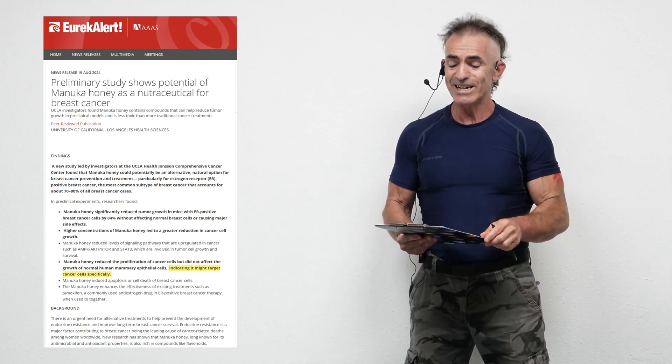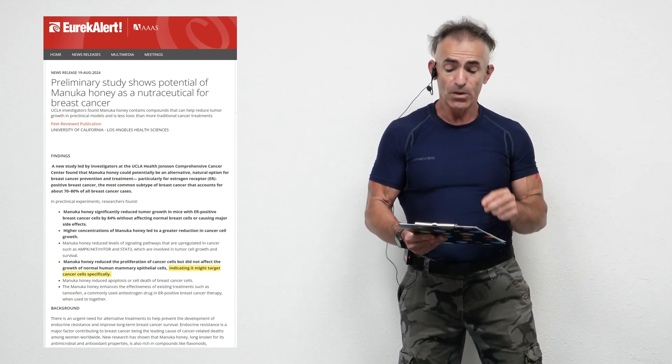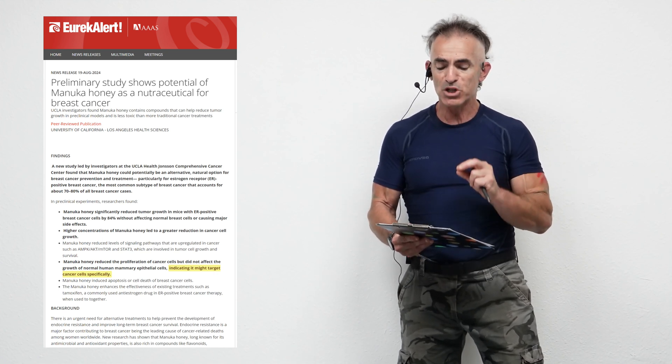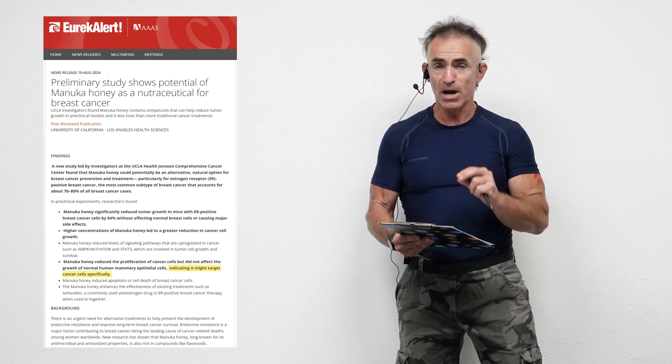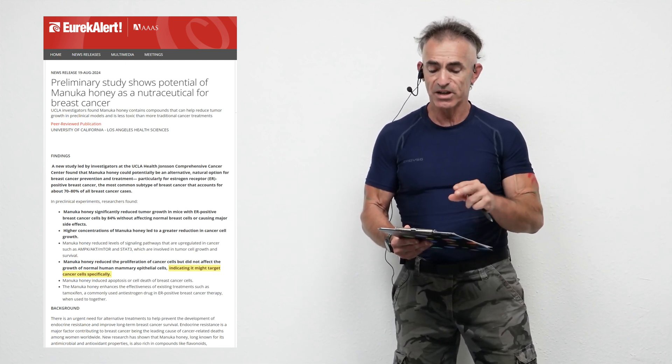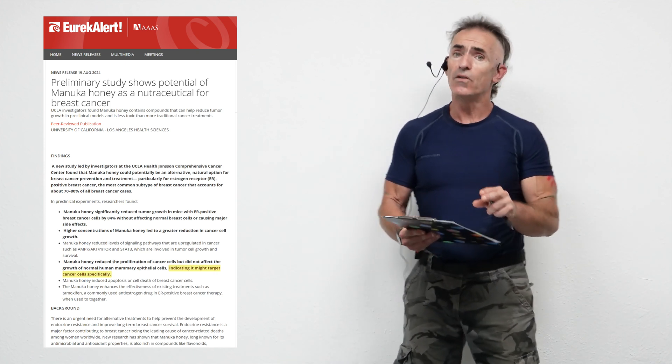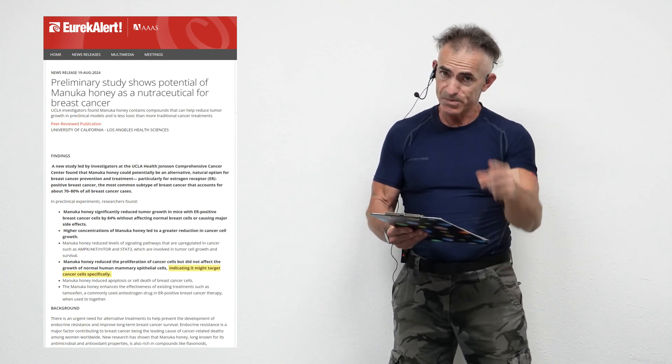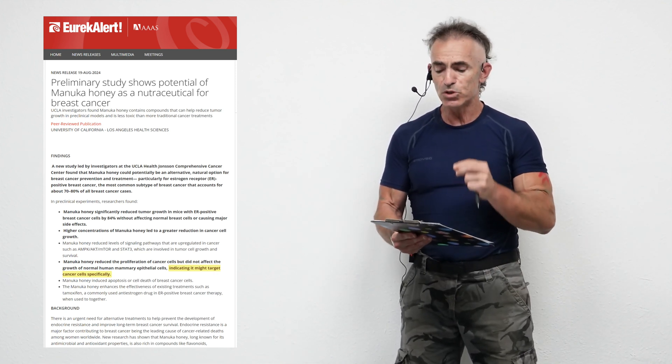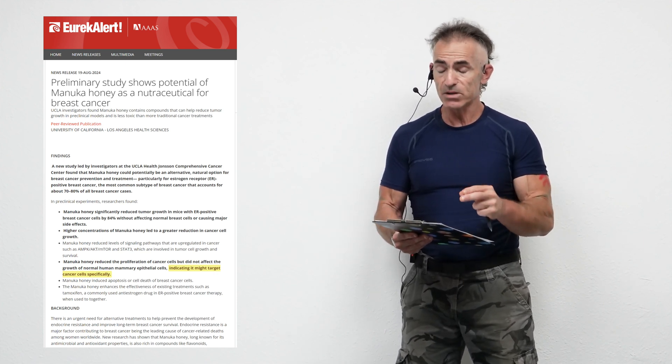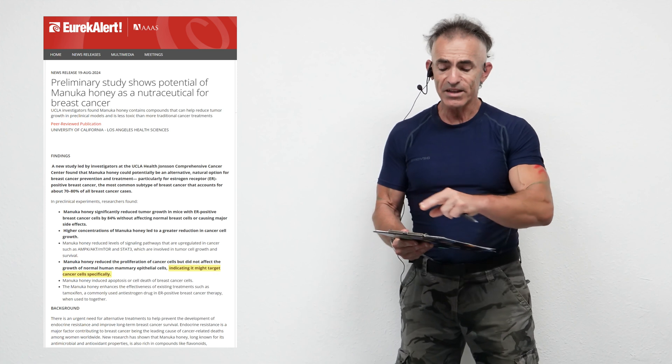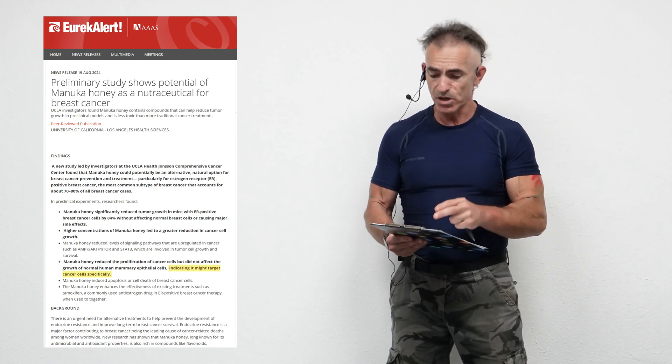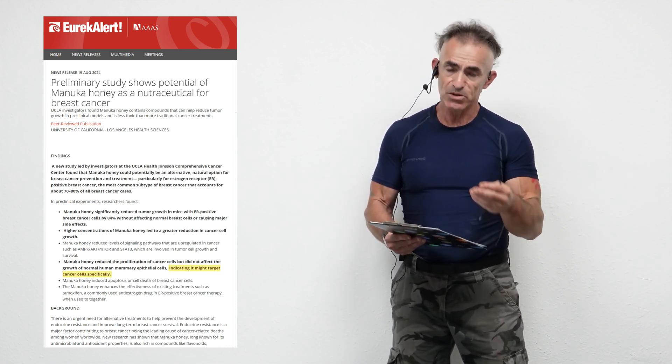A new study led by investigators at the UCLA Health Johnson Comprehensive Center found that Manuka honey could potentially be an alternative natural option for breast cancer prevention and treatment, particularly for estrogen receptor ER positive breast cancer, the most common subtype of breast cancer that accounts for about 70% to 80% of all cases. Manuka honey significantly reduced tumor growth in mice with ER positive breast cancer cells by 84% without affecting normal breast cells or causing major side effects. Higher concentrations of Manuka honey led to a greater reduction in cancer cell growth.